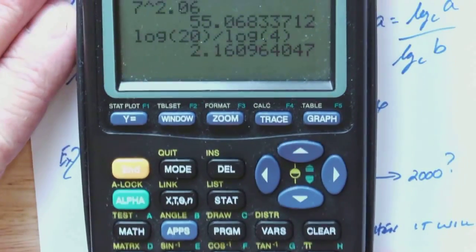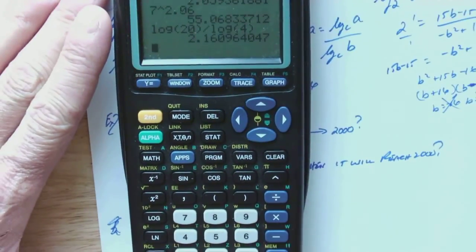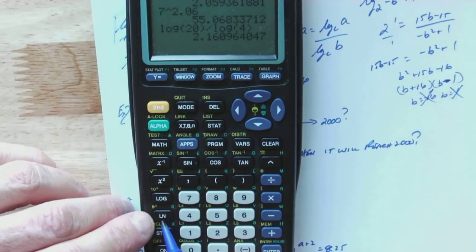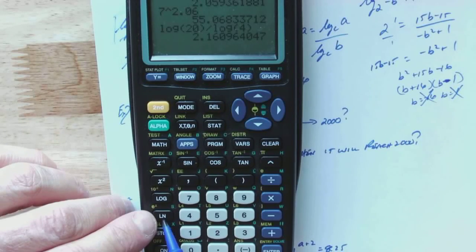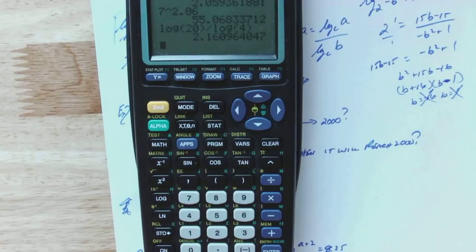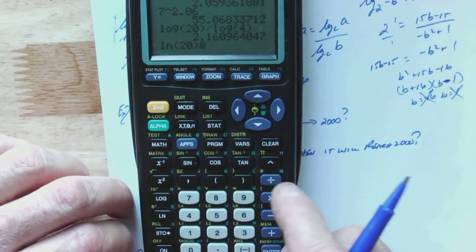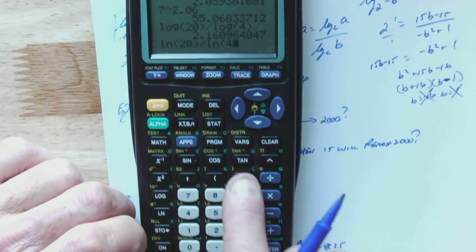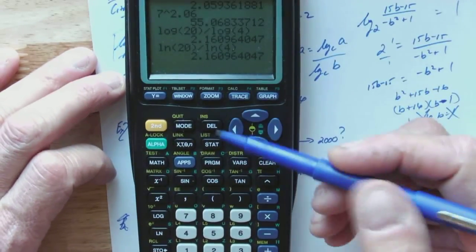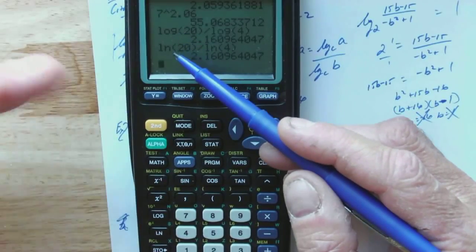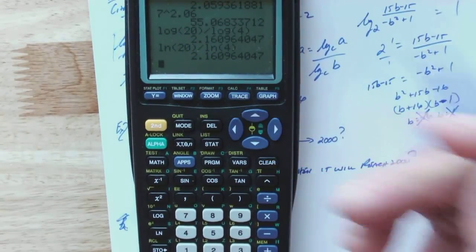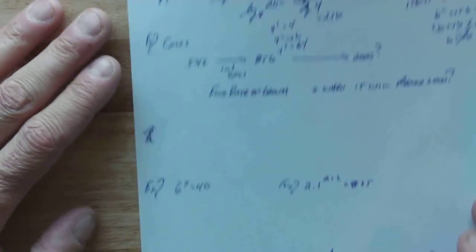For what it's worth, there's another log button here. We're not going to have time to go over this. I could spend time on it next week, but I'm going to work on something else. But, there is this button down here that is LN. That means natural log. My base is E, which is an irrational number, 2.7182. But, I can also do natural log of 20 divided by natural log of 4. And I'm going to get the same answer. It doesn't matter whether I use a base 10 or a base E.